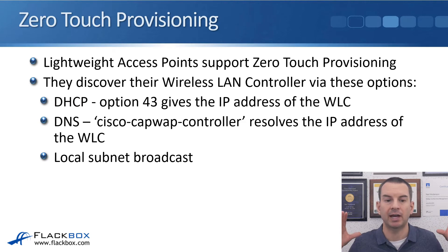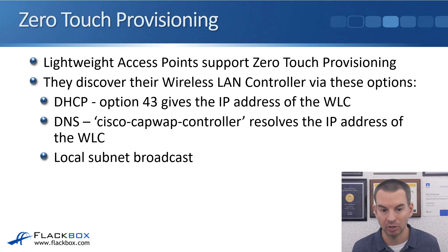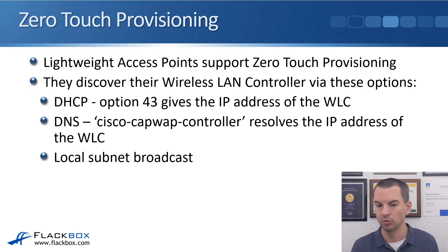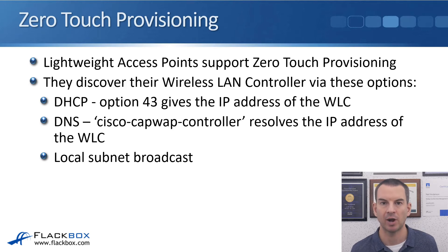Let's look at the first big way that using a wireless LAN controller makes it easier to manage a large number of access points, and that is ZTP — zero-touch provisioning. With zero-touch provisioning, your access points discover the wireless LAN controller and then download their configuration from there. One way they can discover the WLC is via DHCP: you plug your access point into the wired network, it sends out a DHCP request to get its IP address, subnet mask, and default gateway, and it will also receive option 43, which gives it the IP address of the wireless LAN controller.